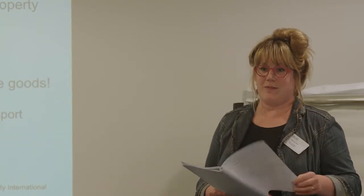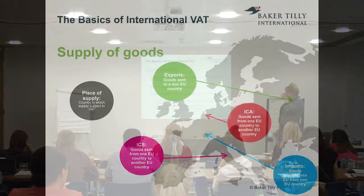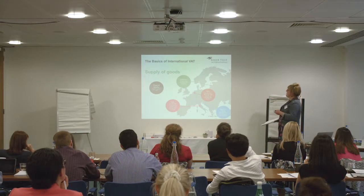To determine the place of supply for goods, there are different types of supplies. Exports are goods sent from an EU country to a non-EU country. Imports are goods coming from a non-EU country to an EU country. Intra-community supplies are goods sent from one EU country to another. Intra-community acquisitions are the corresponding reporting of receiving those goods. And there are also local supplies of goods.